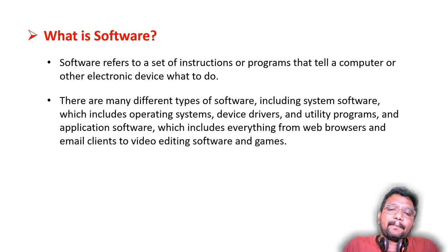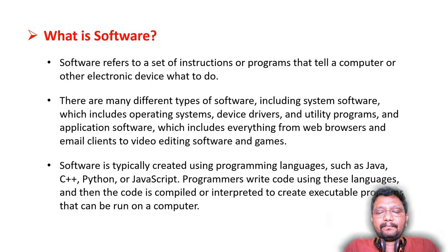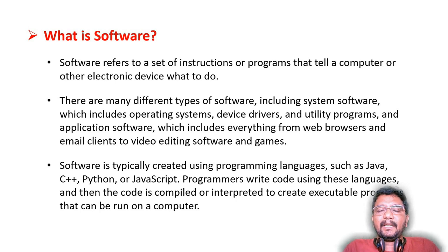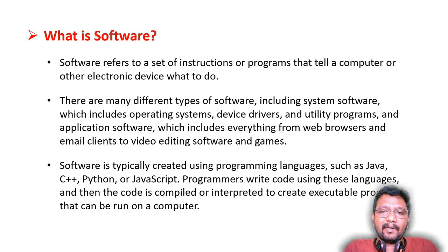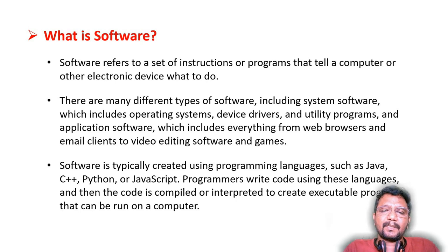We can also discuss how these softwares are made. Software is typically created using programming languages. In one video I will give a clear explanation of programming languages — what is a language, what is a programming language, machine language, high-level language, low-level language, medium-level language — we will discuss later in upcoming videos. Software is typically created using programming languages such as Java, C++, Python, JavaScript, TypeScript, PHP, and many other modern languages.